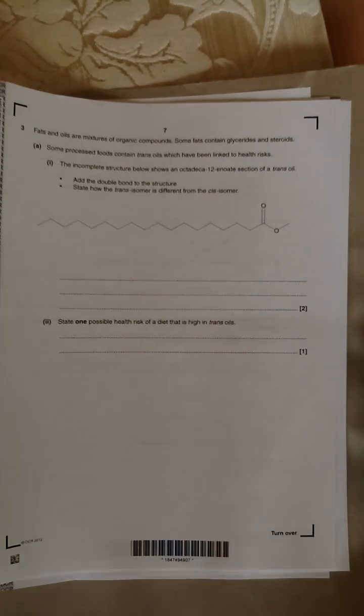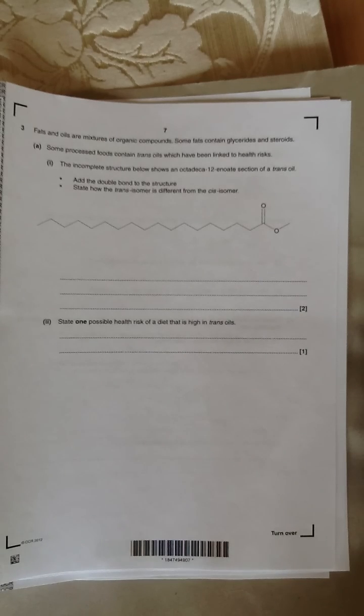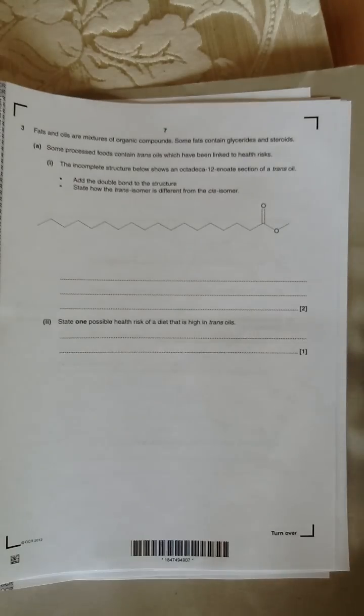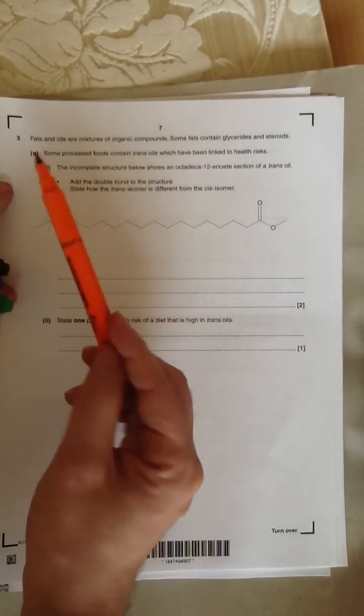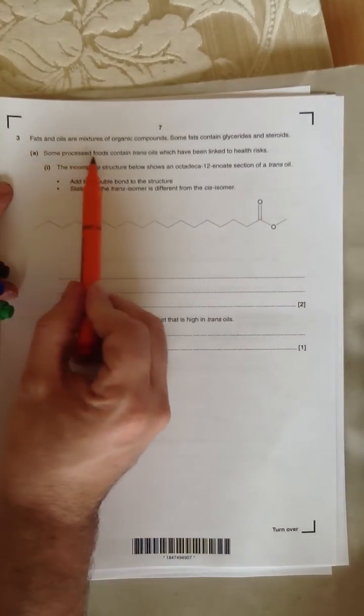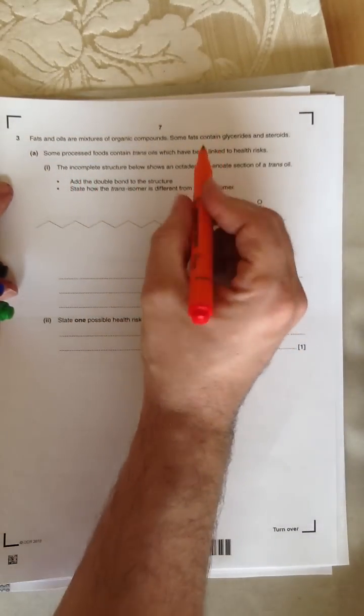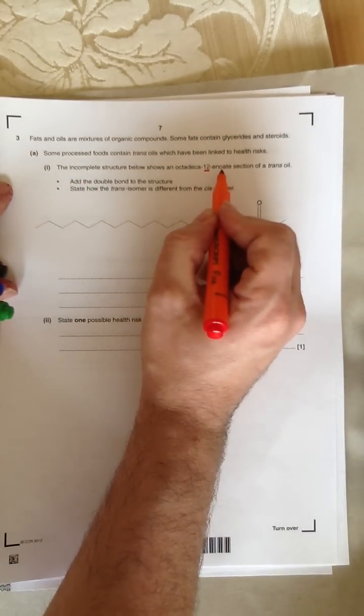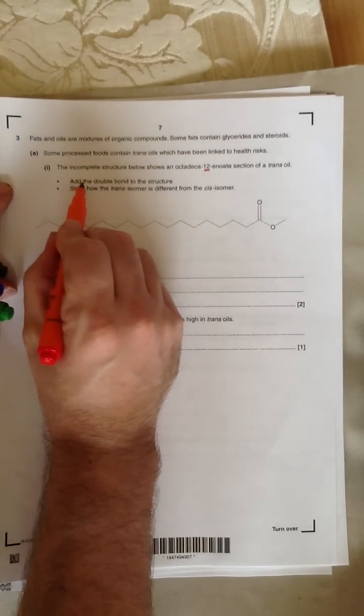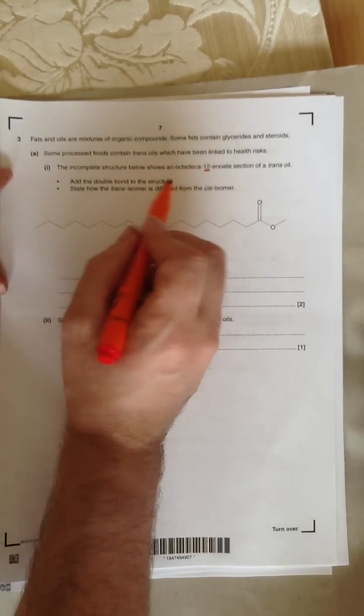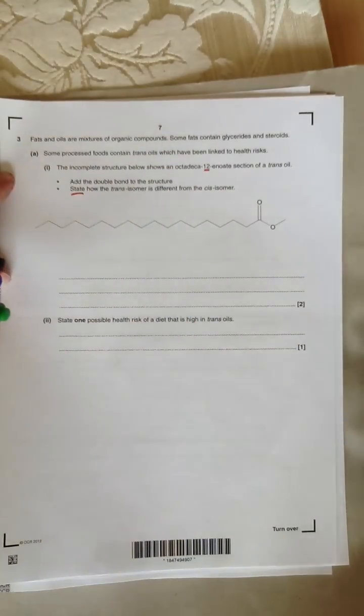This is a question from F324, Rings, Polymers and Analysis, the OCR paper from June 2012. This is a question about fats and cis and trans and double bonds. The question starts by saying fats and oils are a mixture of organic compounds. Some processed foods contain trans oil which have been linked to health risks. The incomplete structure below shows octadeca-12-enoate section of a trans oil. Add the double bond to the structure and state how the trans isomer is different from the cis isomer.